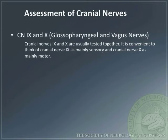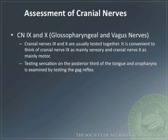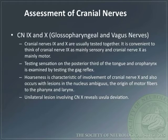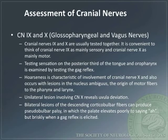Cranial nerves 9 and 10 are usually tested together. It is convenient to think of cranial nerve 9 as mainly sensory and cranial nerve 10 as mainly motor. Testing sensation on the posterior third of the tongue and oropharynx is examined by testing the gag reflex. Hoarseness is characteristic of involvement of cranial nerve 10 and also occurs with lesions in the nucleus ambiguus. A unilateral lesion of cranial nerve 10 reveals uvula deviation. Bilateral lesions of the descending corticobulbar fibers can produce pseudobulbar palsy, in which the palate elevates poorly to saying 'ah' but briskly when a gag reflex is elicited.